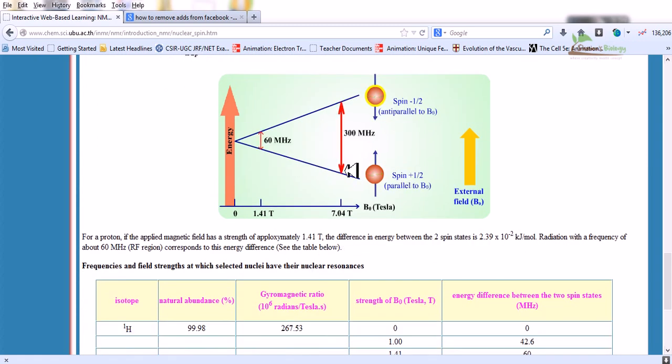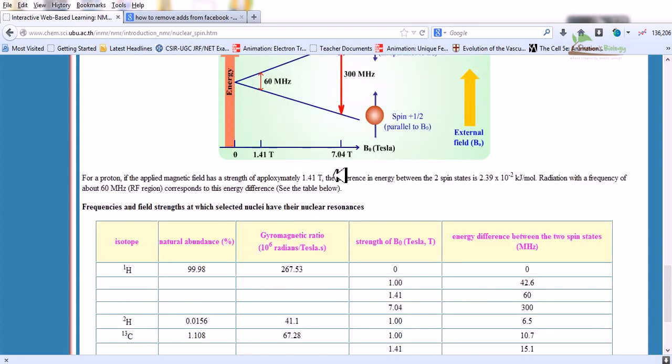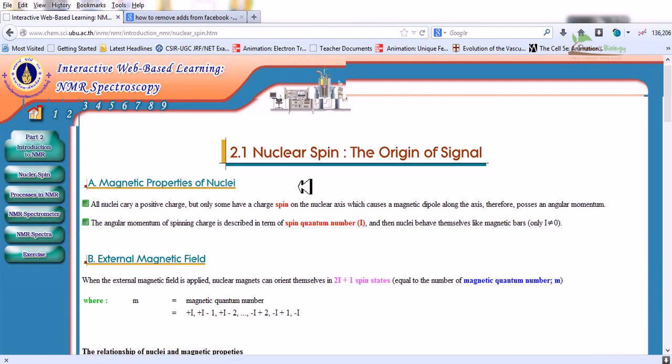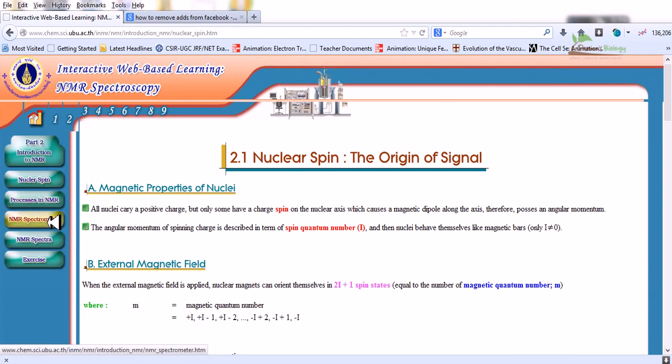Now focus on this picture. The energy difference lies around 60 megahertz, which is the frequency state, and it completely depends on the external field. If we change this external field, which is denoted with the Tesla field, then this energy difference will vary from one place to another. This is a very important thing about NMR.